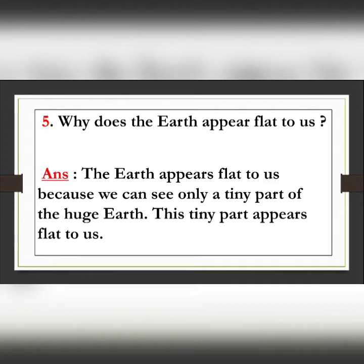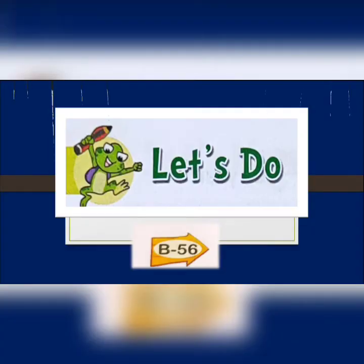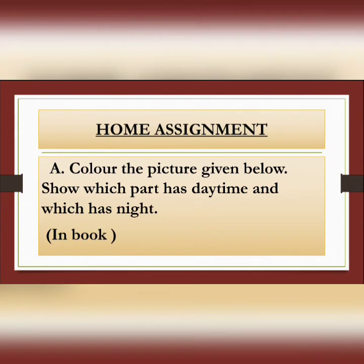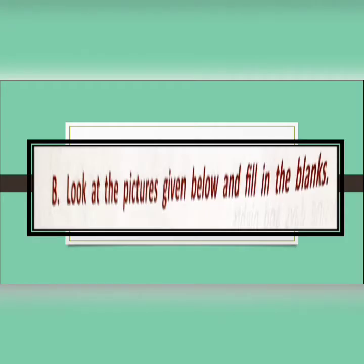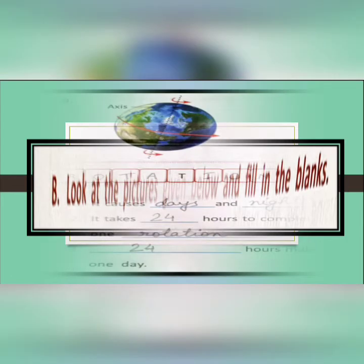With this, the discussion of all the question answers of chapter number 14 is over. Now let us discuss the questions given in the Let's Do part on page number B56. Question A is your home assignment: color the picture given below to show which part has night and which part has day. You have to do this in your book only. Next, moving to question B from the Let's Do part: look at the pictures given below and fill in the blanks — there are two questions.